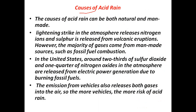There are both natural and manmade causes of acid rain. Natural causes include lightning strikes, which release nitrogen ions into the atmosphere, and volcanic eruptions, which release large amounts of gases such as carbon dioxide, sulphur dioxide, hydrogen sulphide, methane, and carbon monoxide.